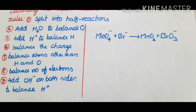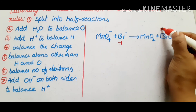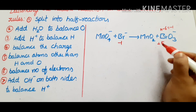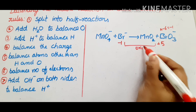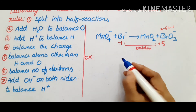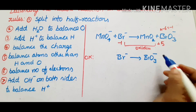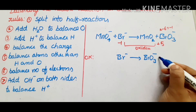Next example: MnO4⁻ + Br⁻ → MnO2 + BrO3⁻. This is a redox reaction that we need to balance in basic medium. First step: split into two half reactions. For the oxidation reaction: Br⁻ → BrO3⁻. The oxidation state goes from -1 to +5, so 6 electrons are lost.